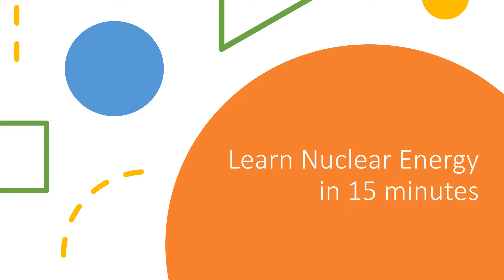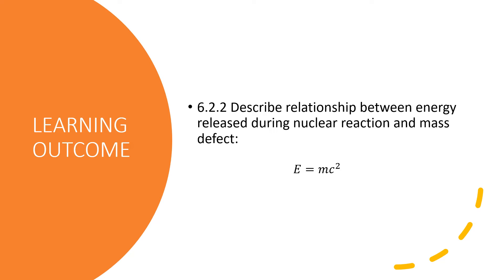Hello and hi everyone. Today we're going to learn nuclear energy in 15 minutes with me, teacher Umi. On today's lesson, we're going to learn an important subtopic in chapter 6, which involves calculation — to describe the famous Einstein equation E equal to mc squared, and describe the relation between energy released during nuclear reaction and mass defect.